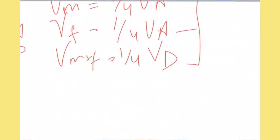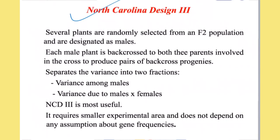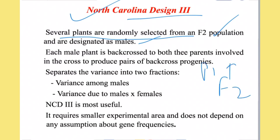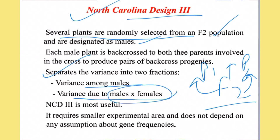NCD2 is also known as the factorial design. Now let's come to NCD3. In NCD3, the crossing plan involves P1, P2, and F2 populations. Several plants selected from the F2 population are designated as males, and each male parent is backcrossed with the original parents P1 and P2, producing backcross progenies. The variance is divided into two fractions: variance among males and variance due to male × female interaction, similar to NCD1 but without a separate female-only fraction.